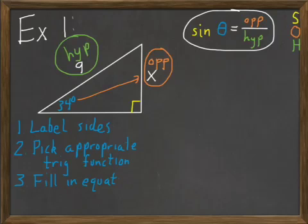The next step is to fill in that equation. My angle theta is 34 degrees, so I'll change theta to 34. Then I need to fill in the ratio. The opposite side is x, so I'll write that on top. And the hypotenuse is 9, so I'll put that on bottom. I've filled in the equation.